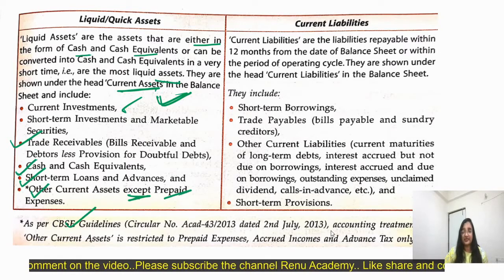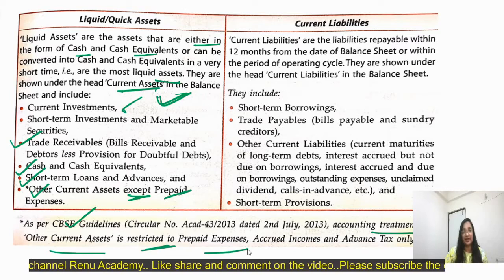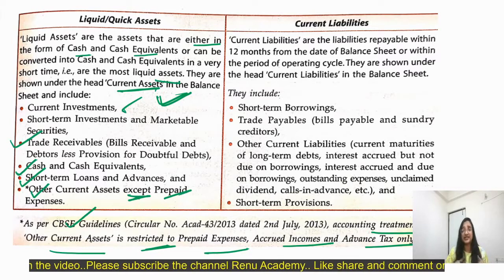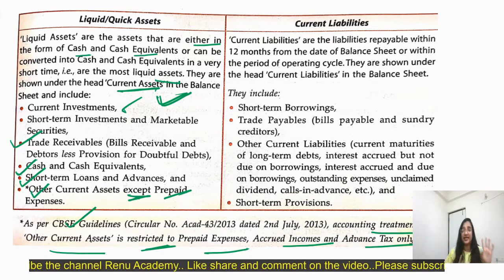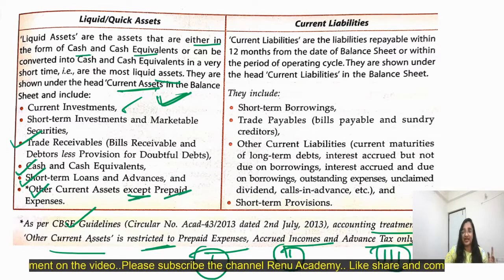The accounting treatment of other current assets is restricted to: prepaid expenses, accrued income, and advance tax only. So remember — other current assets includes only these three terms: number one, prepaid expenses; number two, accrued income; number three, advance tax only.